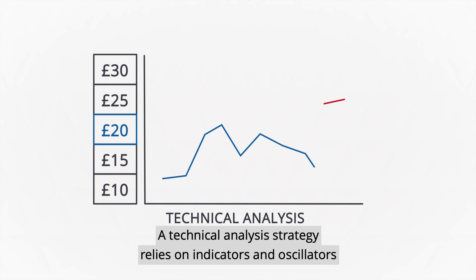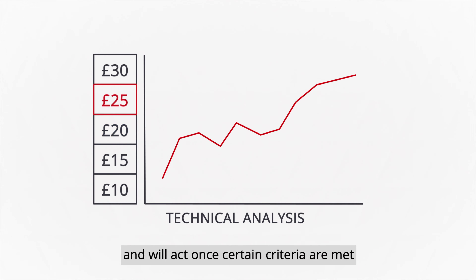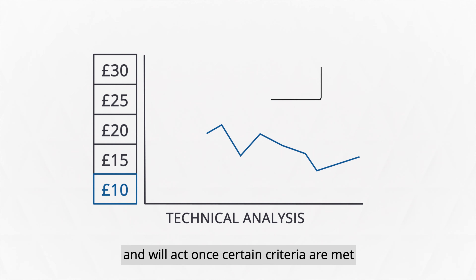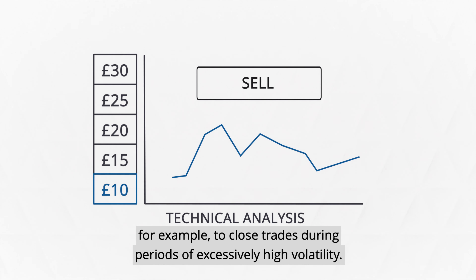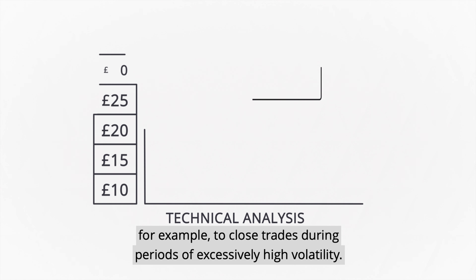A technical analysis strategy relies on indicators and oscillators, and will act once certain criteria are met — for example, to close trades during periods of excessively high volatility.